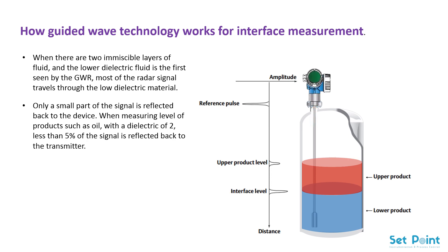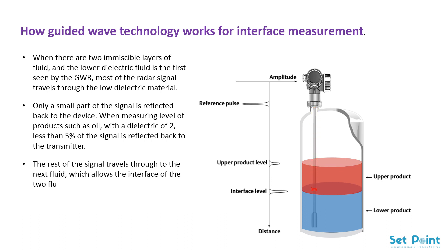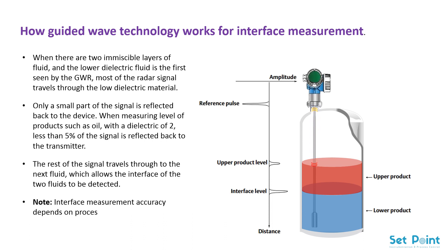The rest of the signal travels through to the next fluid, which allows the interface of the two fluids to be detected. Interface measurement accuracy depends on process conditions such as product dielectric and a distinct interface between the two fluids.